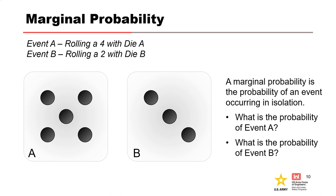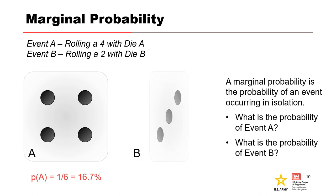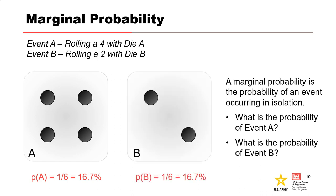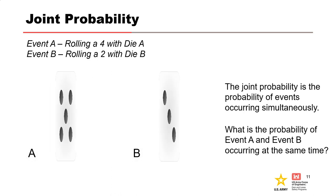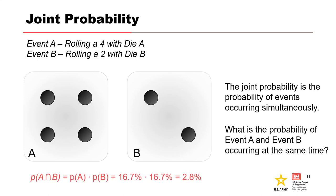Consider a simple example with two standard six-sided dice. If we roll die A, the probability of rolling a 4 (event A) is 1 in 6, or 16.7%. The probability of rolling a 2 with die B (event B) is also 1 in 6, or 16.7%. These are both marginal probabilities. Now if we want the probability of rolling a 4 with die A and a 2 with die B at the same time, this is a joint probability calculated by multiplying the marginal probabilities together: 16.7% × 16.7% = 2.8%.